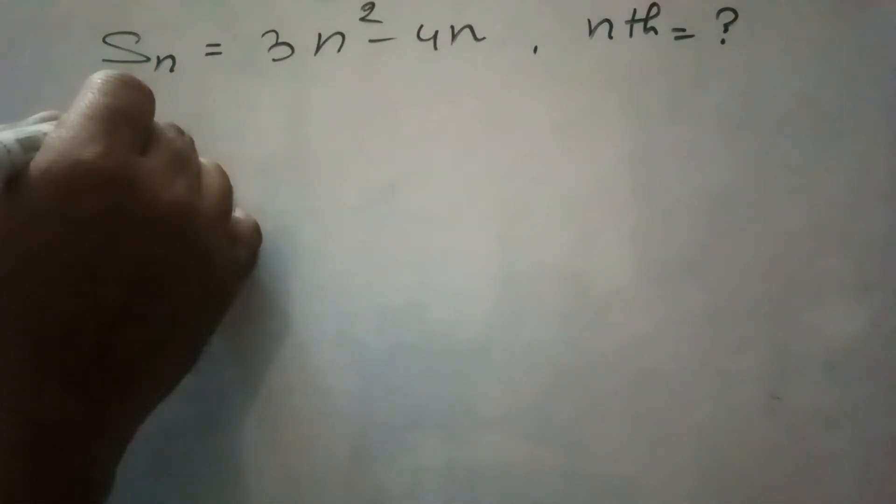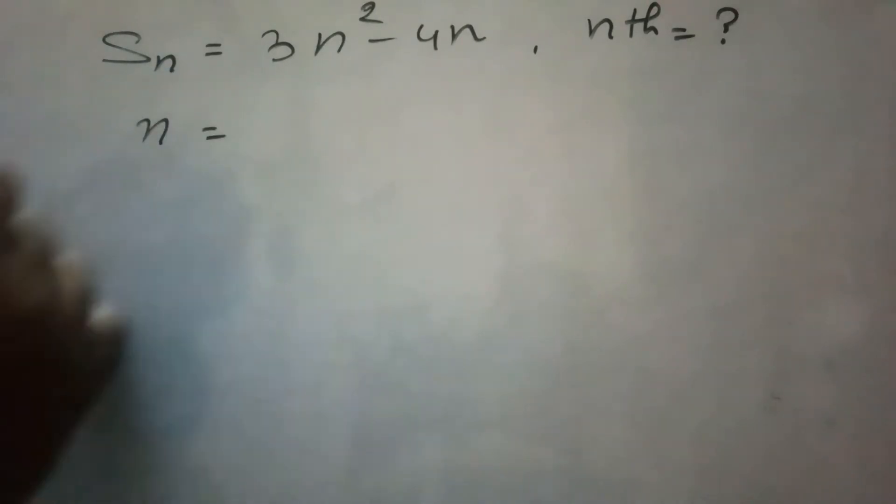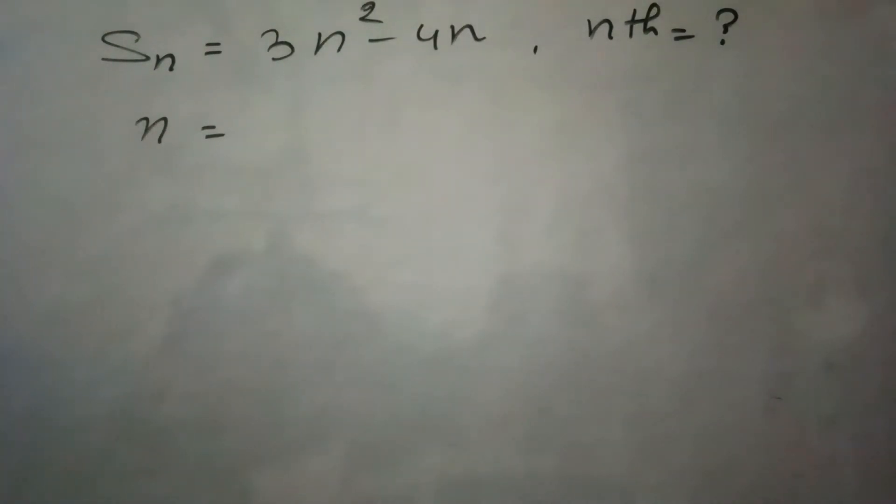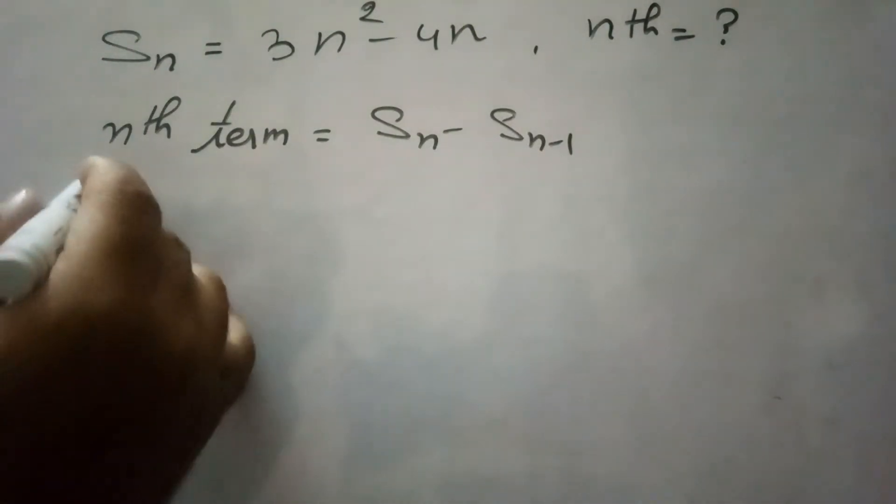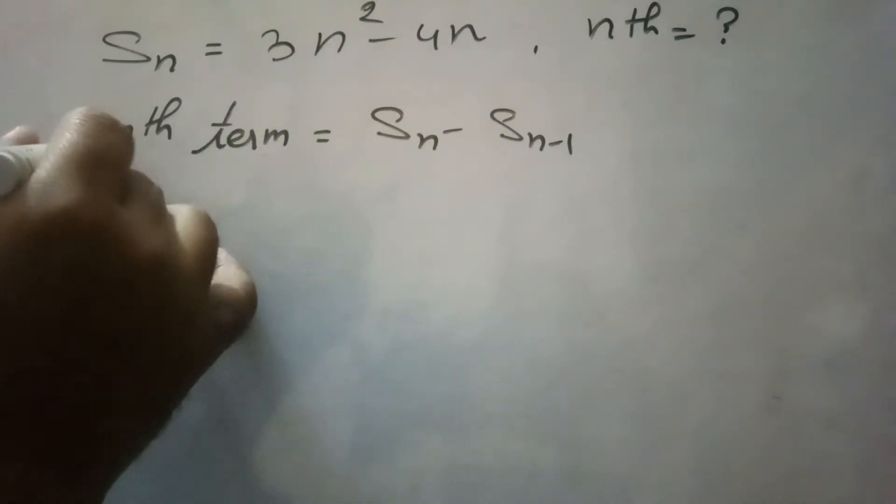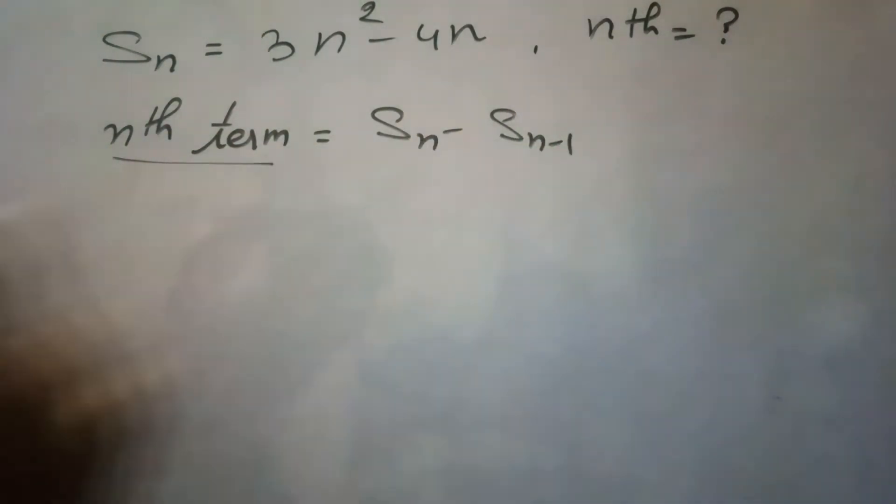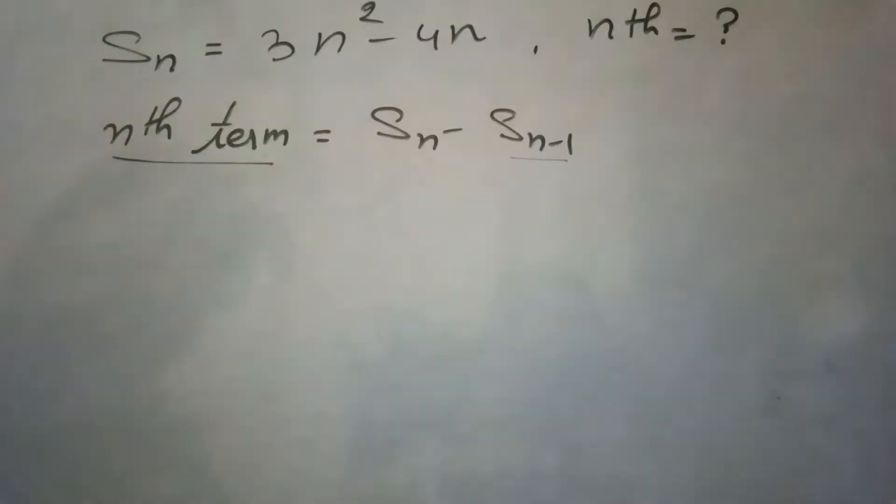To find the nth term, there is a formula: nth term equals Sn minus S(n-1). We will calculate S(n-1) and then using this formula we will find the nth term of this AP.